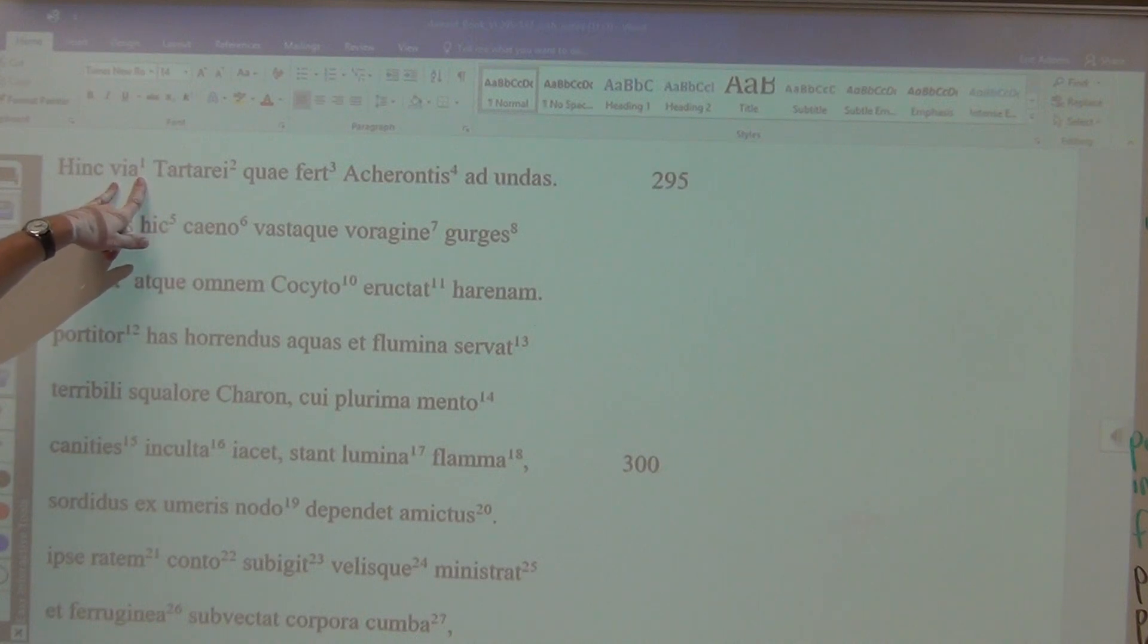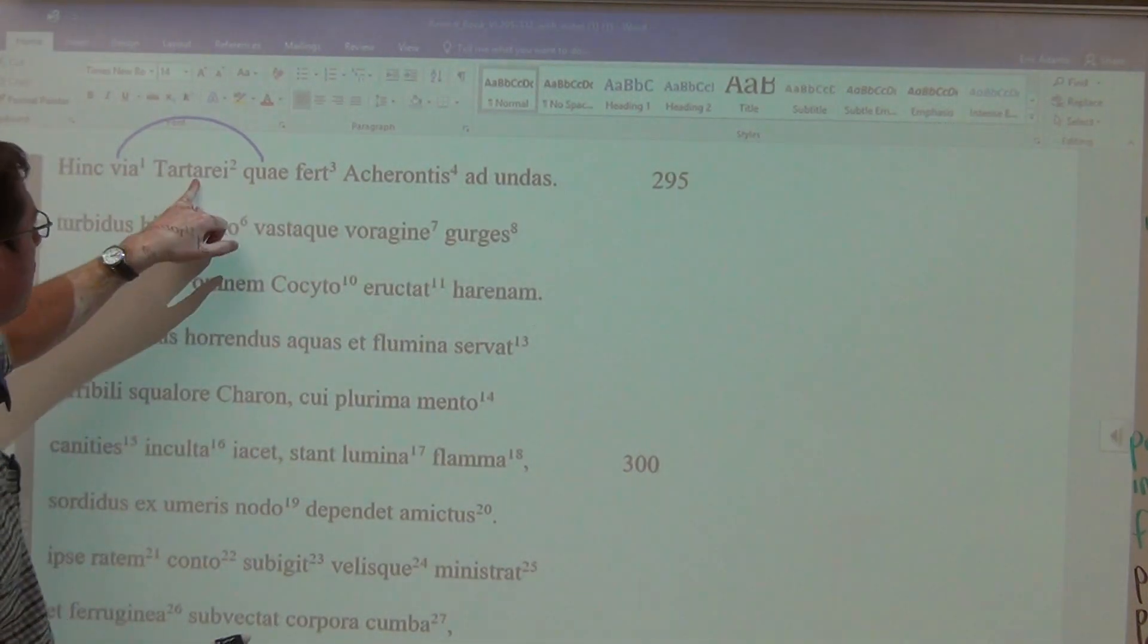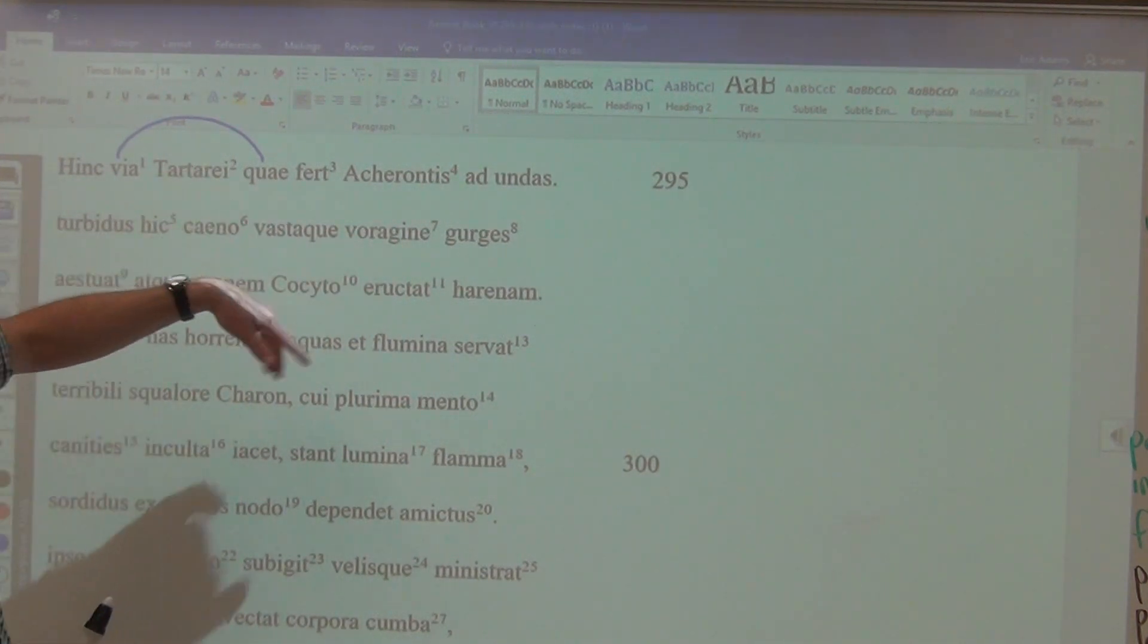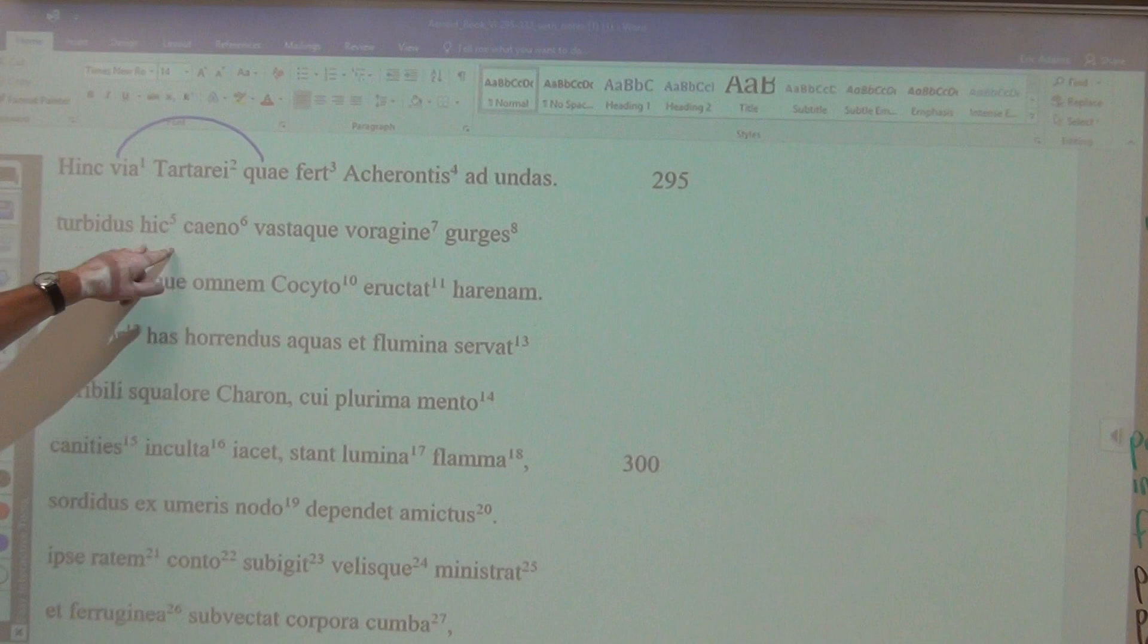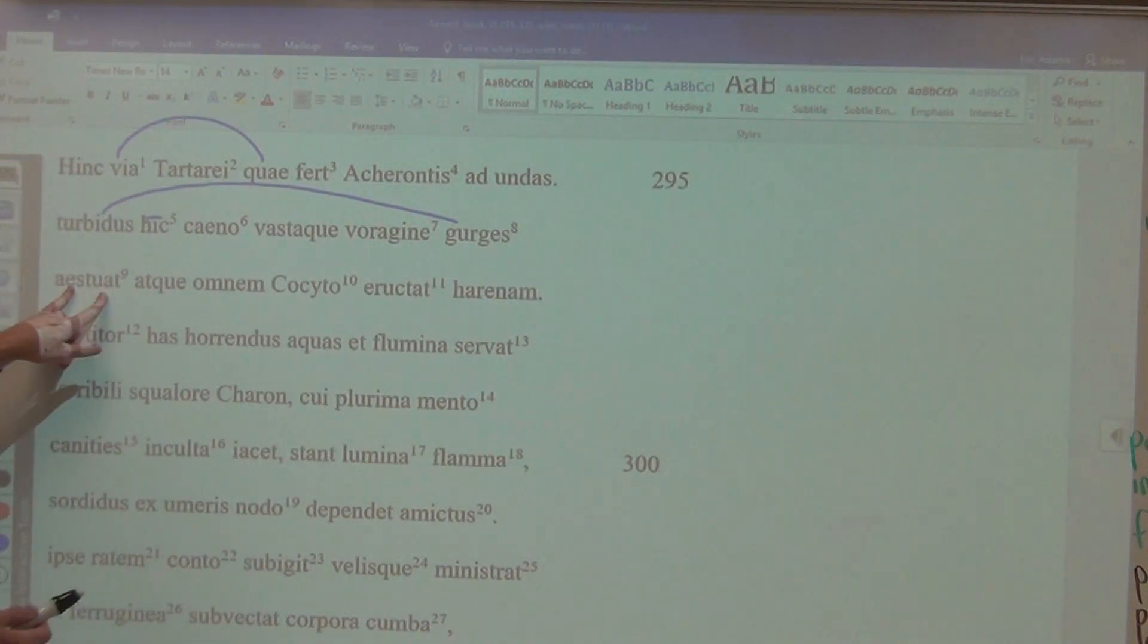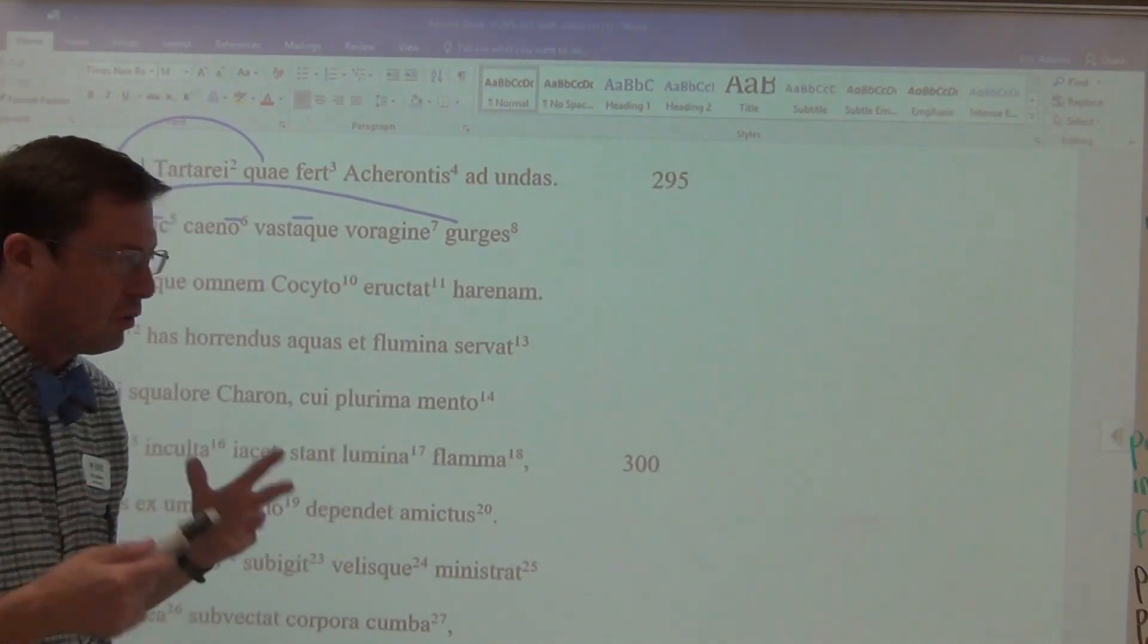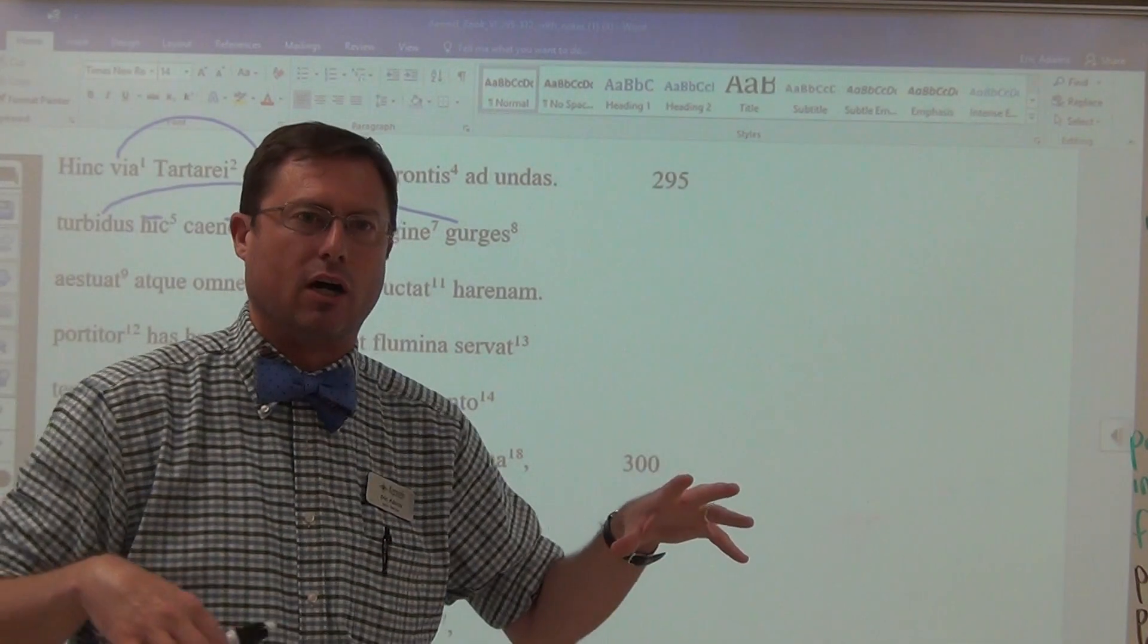From here, there is a road, implying est is there. A road which brings itself to the waves of Tartarian Acheron. Tartarus is a particular section of the Underworld, and it is just an adjective to describe which part of Acheron, the part that is the Tartarian. Here, with a long I, a turbid bubbling. It rages, it heats up with mud in the ablative, and with a vast whirlpool chasm.